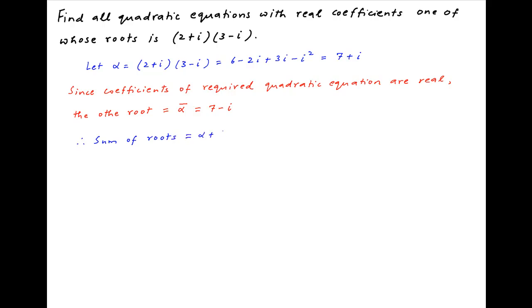Therefore, the sum of the roots of the required quadratic equation is equal to 7 plus i plus 7 minus i, which is equal to 14.